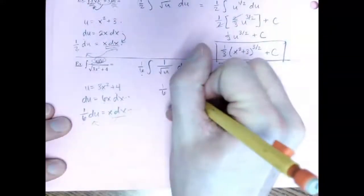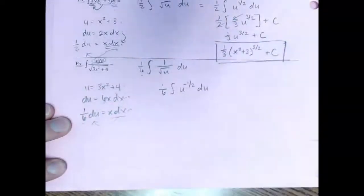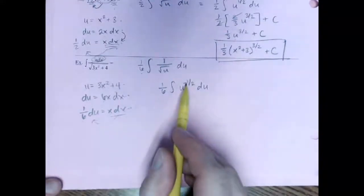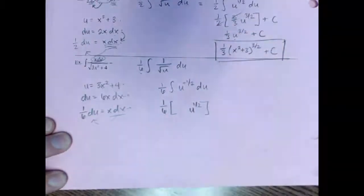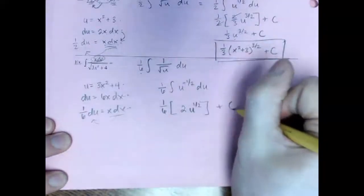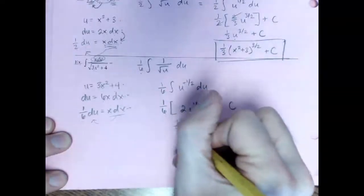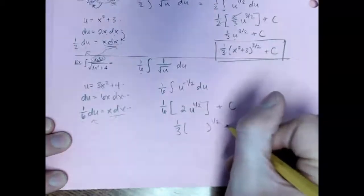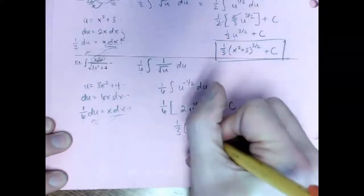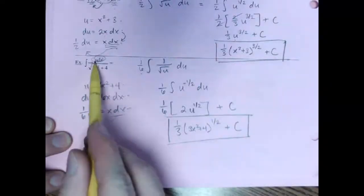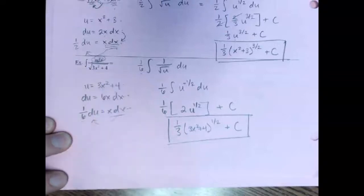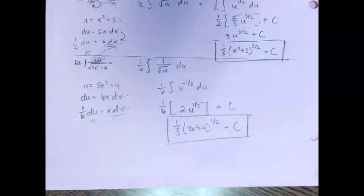Rewrite it: the square root on the bottom means a negative 1/2 power, so I have U to the negative 1/2. Adding 1 to the exponent gives a positive 1/2; divide by 1/2 gives a factor of 2. So 2 times 1/6 reduces to 1/3 times U to the 1/2 plus C. Then reverse substitute: 1/3 times 3X squared plus 4 to the 1/2 plus C. That is your original function whose derivative is X over the square root of 3X squared plus 4. U-substitution is a little tricky, but hopefully it's getting easier. We'll end this video and do the next two pages of examples in the next one.